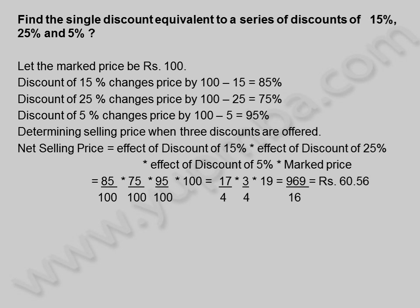Discounts is equal to 85/100 into 75/100 into 95/100 into 100, is equal to 17/4 into 3/4 into 19, is equal to 969/16, is equal to 60.56 rupees.